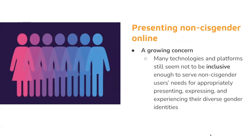Prior research has shown that non-cisgender technology users are often considered marginalized, despite various efforts to support these users' online experiences. A growing concern is that many technologies and platforms still seem not to be inclusive enough to serve these users' needs for appropriately presenting, expressing, and experiencing their diverse gender identities. As digital social spaces continue to evolve, it is important to continue in-depth investigations of nuanced gender presentation and expression online, and how emerging new technologies may support or hinder such experiences.